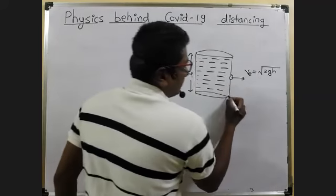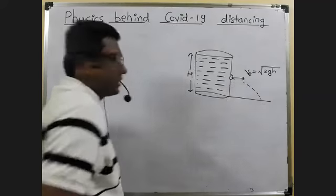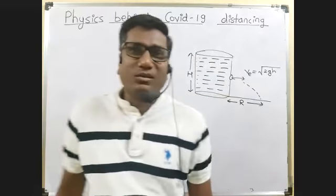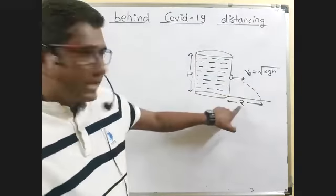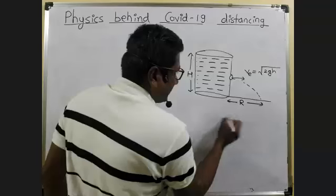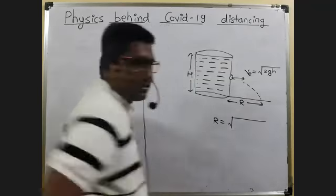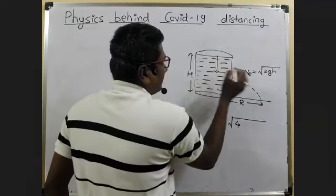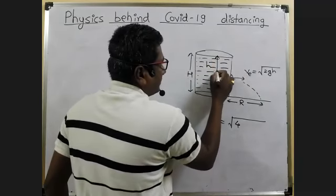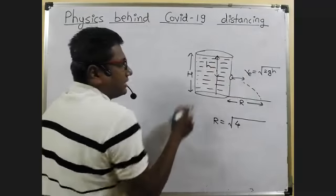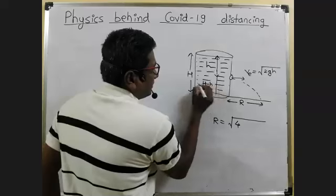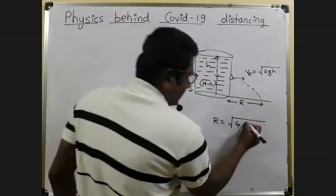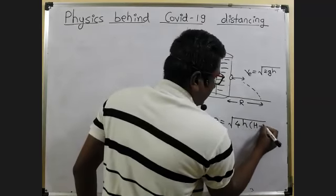We know that range will be horizontal distance that fluid travels after making the hole. We had derived formula for this range. The formula for range was R is under root 4 times up times down. So 4 times up is h, down is h minus h.